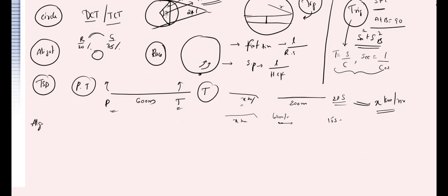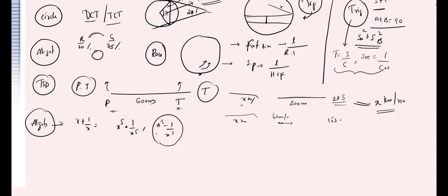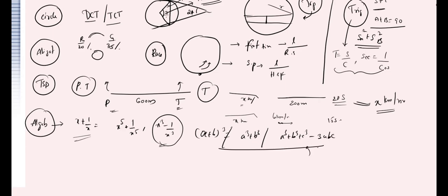Next is algebra. They give x + 1/x and ask you to find x⁵ + 1/x⁵ or x³ − 1/x³. Make sure you read all relevant formulas. Also, remember basic expansion formulas like (a + b)³, a³ + b³, and a³ + b³ + c³ − 3abc. Make sure you read these formulas before going to the exam, because questions are asked based on these.